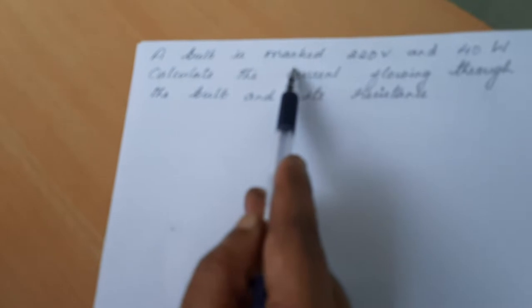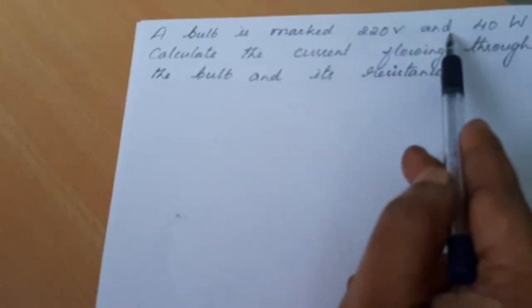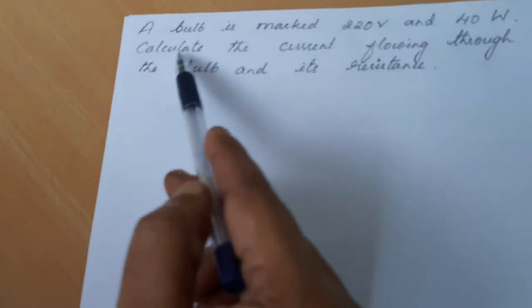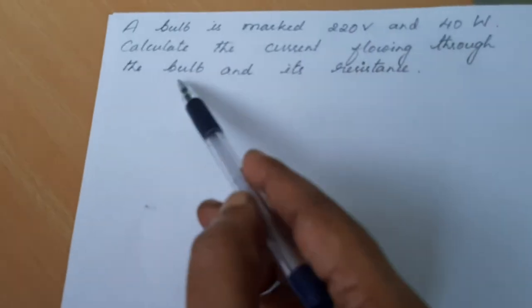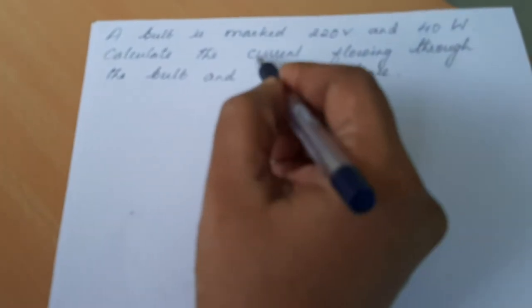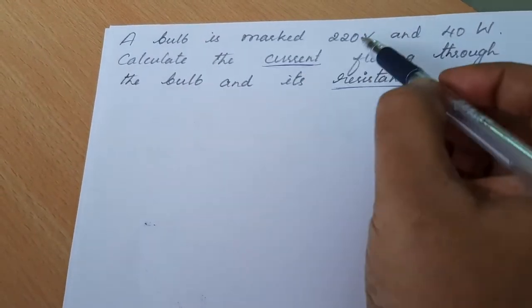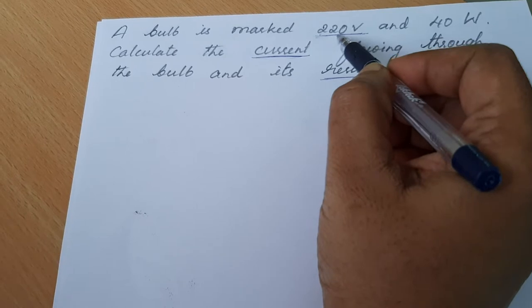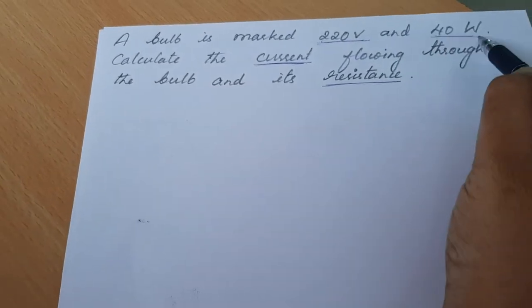A bulb is marked 220 volt and 40 watt. Calculate the current flowing through the bulb and its resistance. So here we need to calculate current and resistance. We have been provided with potential difference in volts and power in watts.